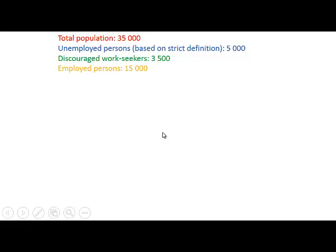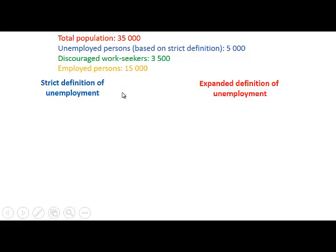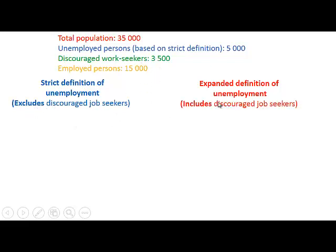Let's look at an example. We have a total population of 35,000. There are 5,000 unemployed persons based on the strict definition, 3,500 discouraged work seekers, and 15,000 employed persons. We will use both the strict and the expanded definition to calculate the unemployment rate. The strict definition excludes the discouraged work seekers, while the expanded definition includes them.